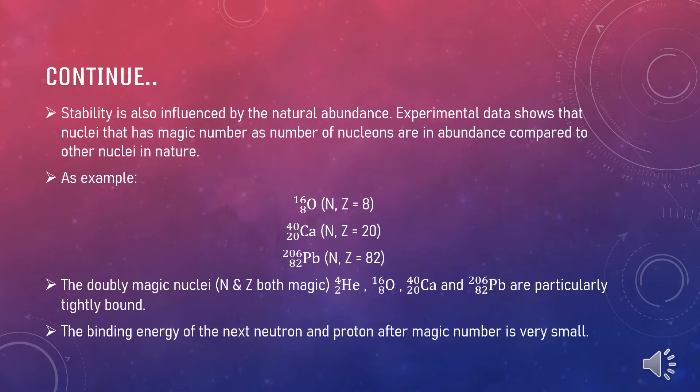Stability can also be influenced by the natural abundance. Experimental data shows that nuclei that has magic number as number of nucleons are in abundance compared to other nuclei in nature. Some of the examples are oxygen which has magic number 8, calcium that has magic number 20, and plumbum that has magic number 82. These three elements are most abundant in nature.